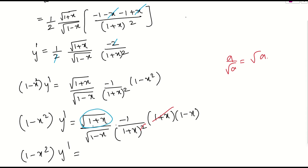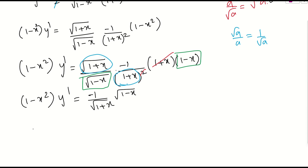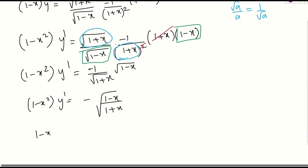So applying this: root of (1 plus x) divided by (1 plus x) will simply give 1 by root of (1 plus x), and root of (1 minus x) with the negative sign gives root of (1 minus x). So finally, (1 minus x squared) times y dash equals minus root of (1 minus x) by (1 plus x). You just check the original question — (1 minus x) by (1 plus x) under the root is nothing but y. So I will substitute: (1 minus x squared) into y dash equals minus y.